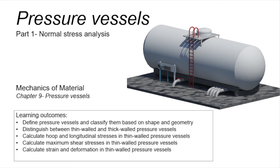So far in Mechanics of Materials, we have talked about different types of elements, like axially loaded elements, torsional elements, or beams, in which we discussed how to determine stresses and strains, as well as deformations.